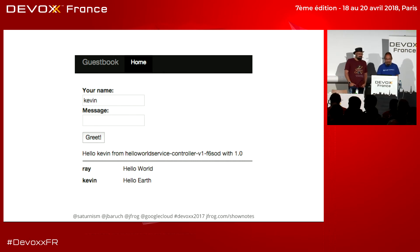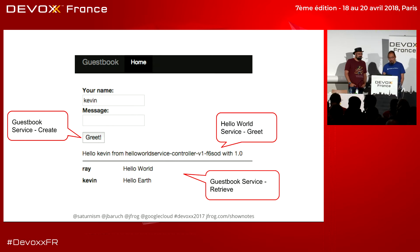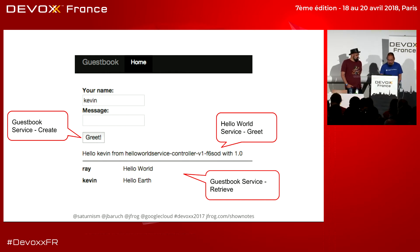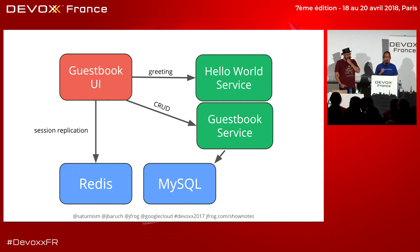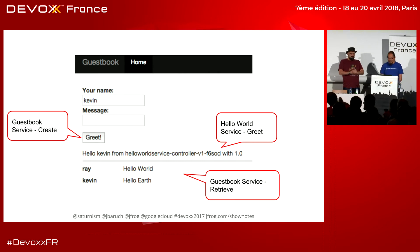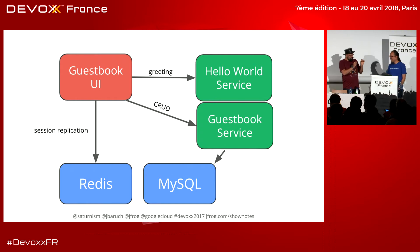This is a guestbook application. If you put your name and a message in there, say something nice, and click on greet, we're going to do two very awesome things: write to the database, and say hello world to you. It's the two best applications put together - hello world and guestbook. However, we made this into a microservices architecture. Behind the scenes we have a few different microservices: a front-end and two back-ends, both talking to Redis and MySQL. Redis for session replication and MySQL for the data. There's a microservice for each and every line you see on the screen.